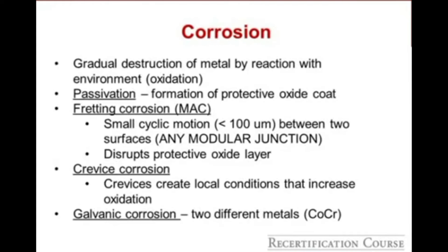Corrosion is the gradual destruction of metal by reaction with the environment. Fretting corrosion occurs with small cyclic motion between two surfaces, which can occur at any modular junction. In total hip arthroplasty and trunnionosis, the concern is at the femoral head and femoral neck junction, which can disrupt the protective oxide layer. Crevice corrosion occurs when a crevice is created, dramatically increasing the rate of oxidation. Galvanic corrosion involves two different metals.